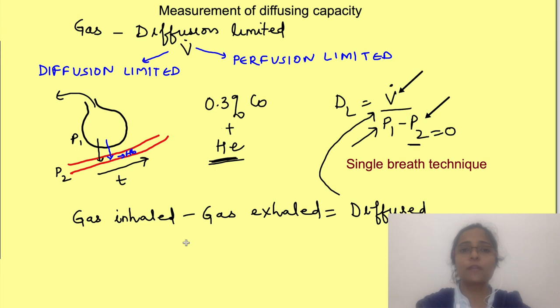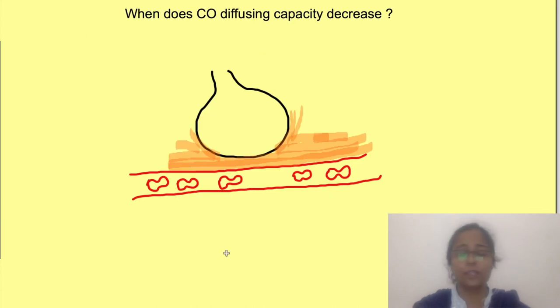Diffusion capacity of lungs for carbon monoxide measured by this method comes to 25 ml per minute per millimeter mercury partial pressure difference. This value increases 2 to 3 times in exercise due to capillary recruitment and capillary distension which is a subject of another video perhaps.